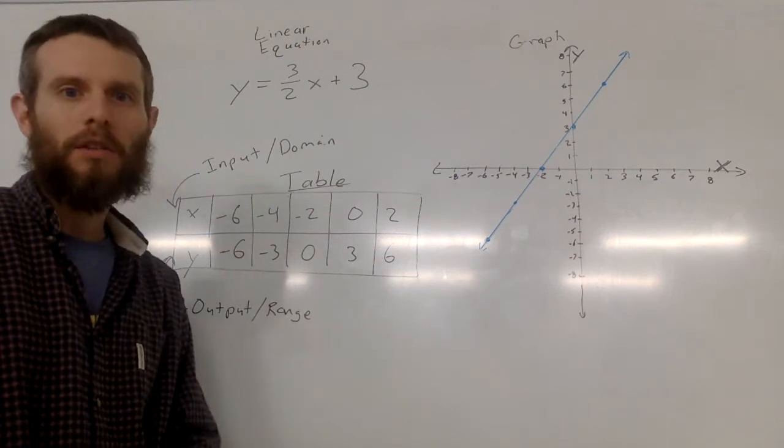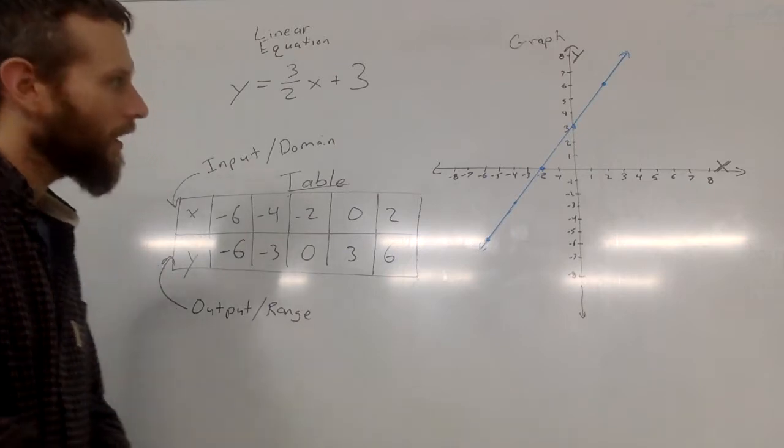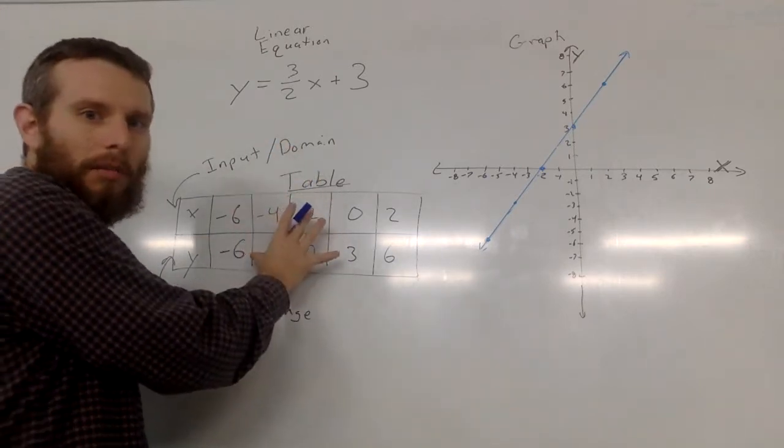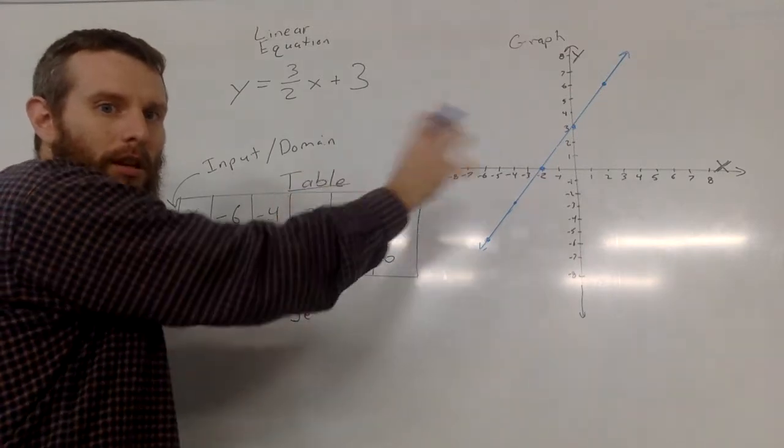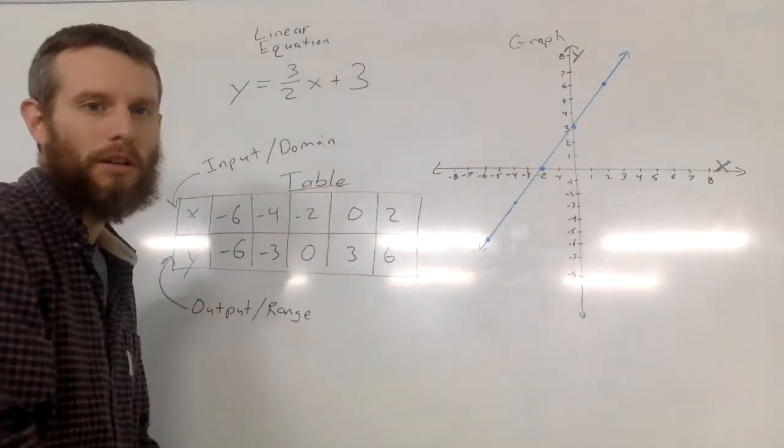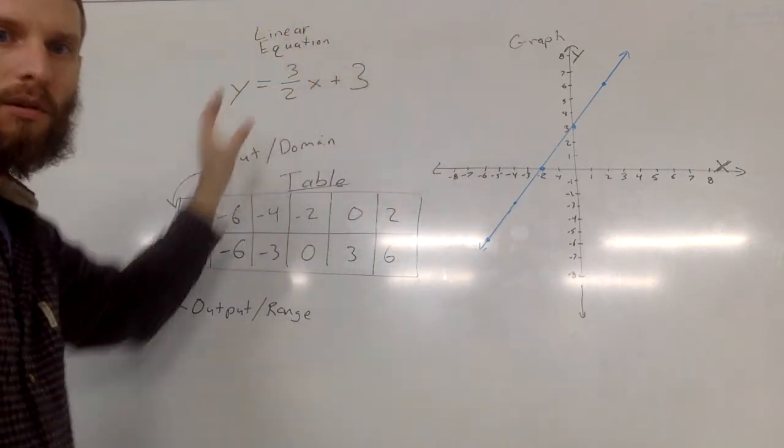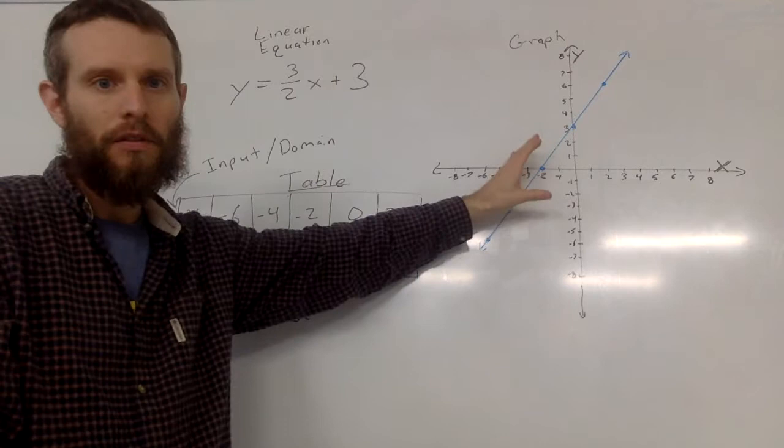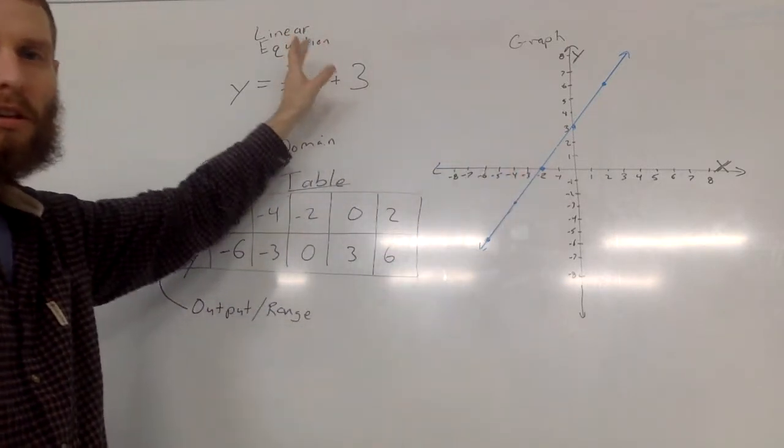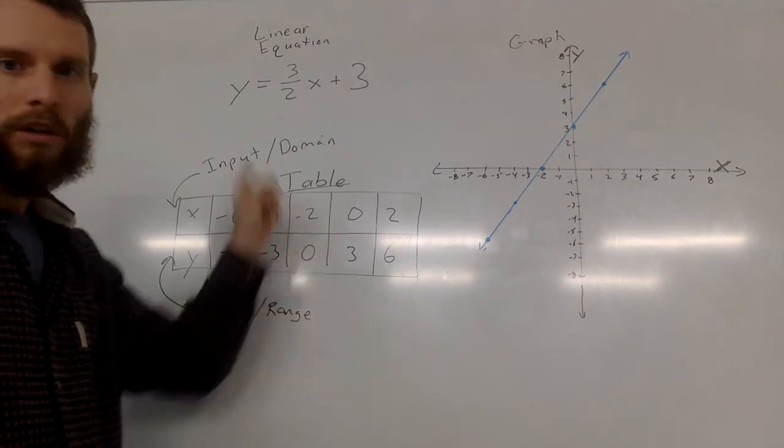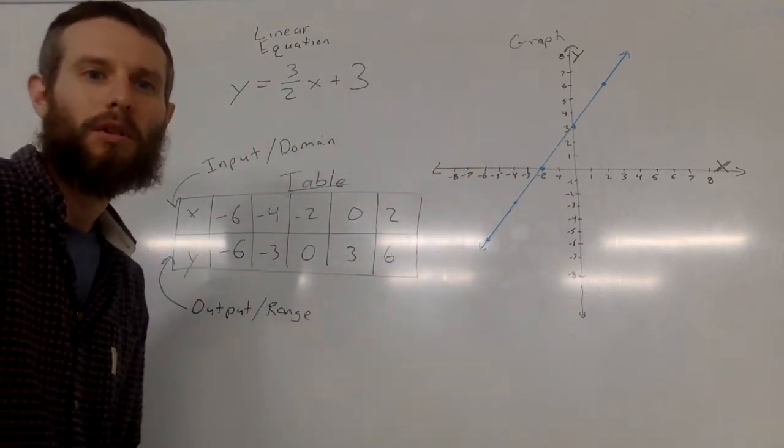And so by the end of this whole thing, what I really want you to be able to do is to be able to, if you're given a table, to be able to produce a graph or a linear equation. And if you're given a linear equation, you should be able to produce a graph or a table. And if you're given the graph, again, you should be able to produce the linear equation or the table. So given one of these three things, you should be able to produce the other two.